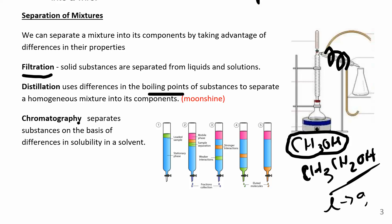Chromatography is when you separate things based on their solubility in a solvent. Suppose you have a sample with a mixture of two different compounds and a stationary phase. One compound may have stronger or weaker interactions with the stationary phase and will move through at a different rate. This is your mobile phase — what you're trying to separate. The compounds come out at different times, separating your mixture. You'll do some chromatography in organic chemistry as well.